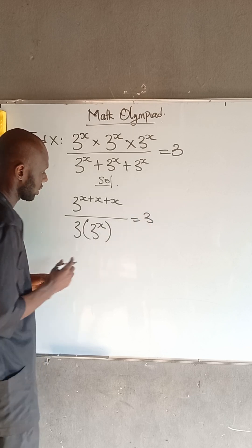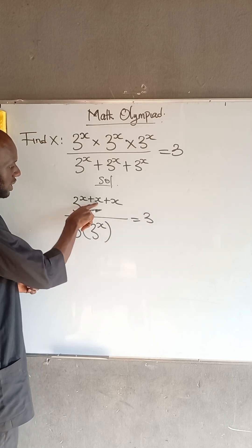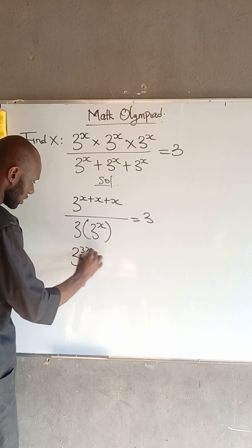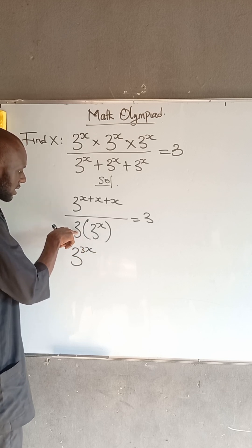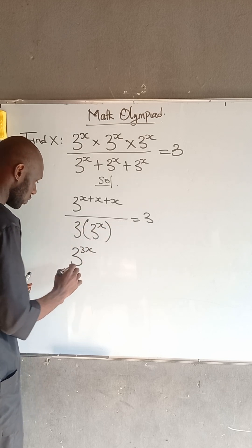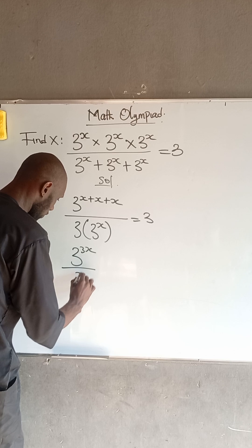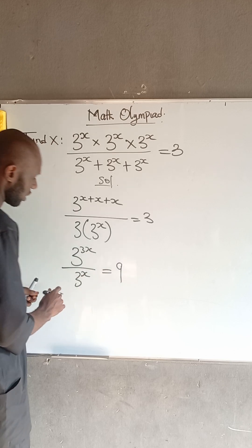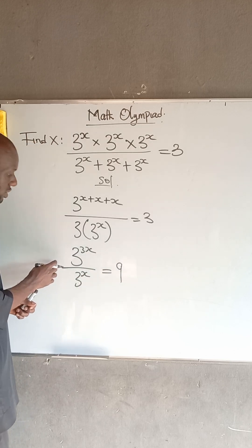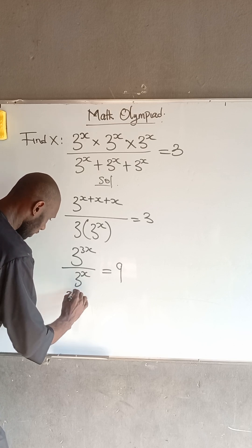At this point, x plus x plus x is 3x, so we have 3 to the power of 3x. The 9 multiplies the 3, so this becomes divided by 3 to the power of x, equal to 9. Now if we apply the division law of indices, this becomes 3 to the power of 3x minus x, equal to 9.